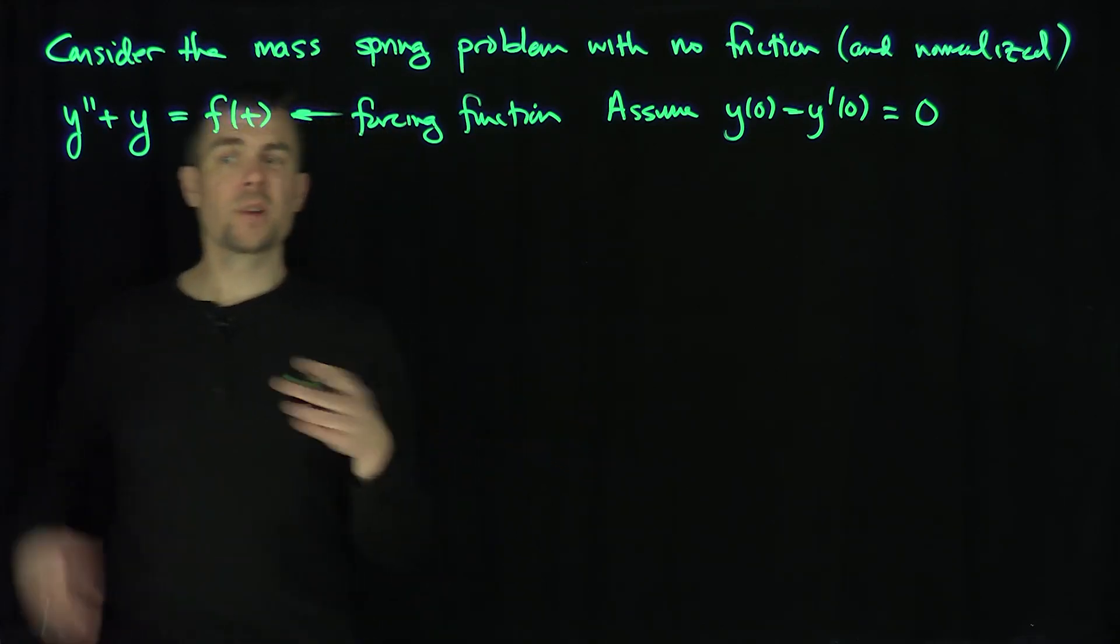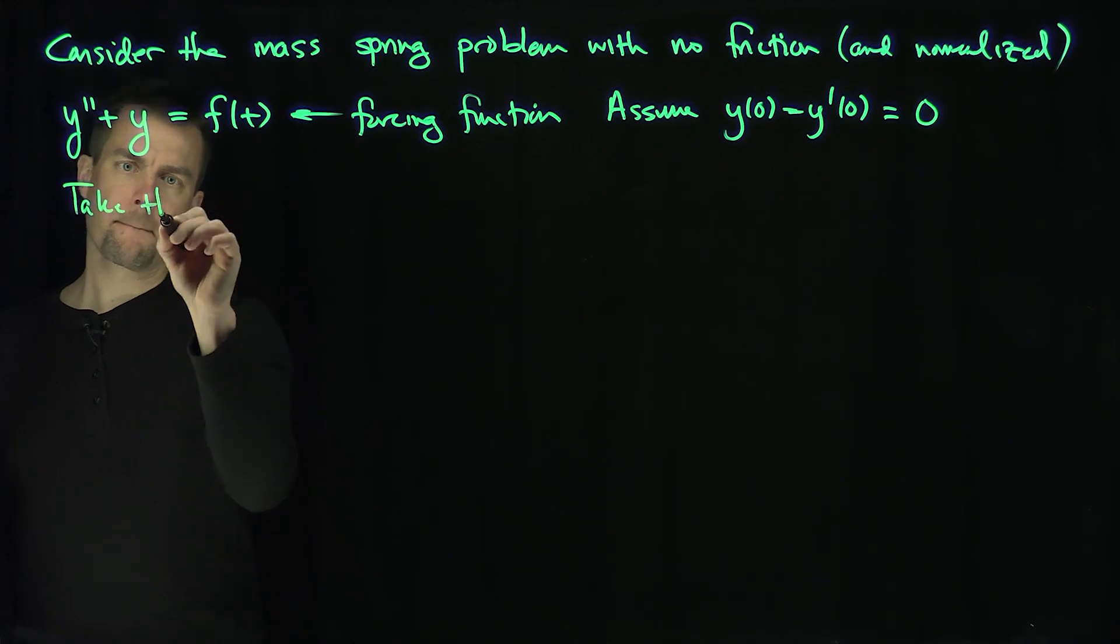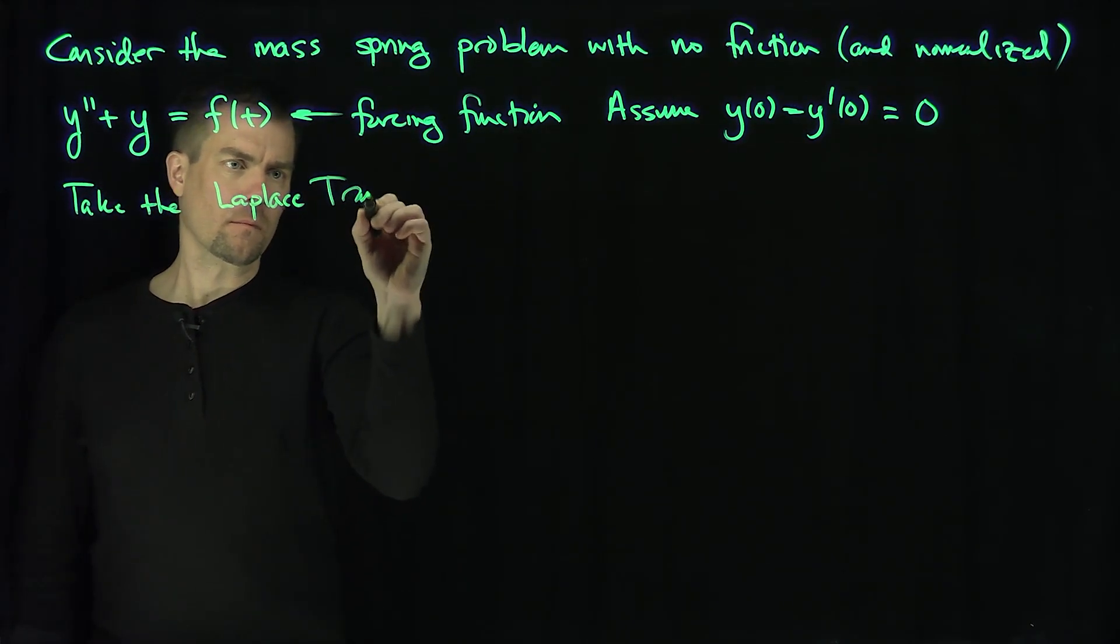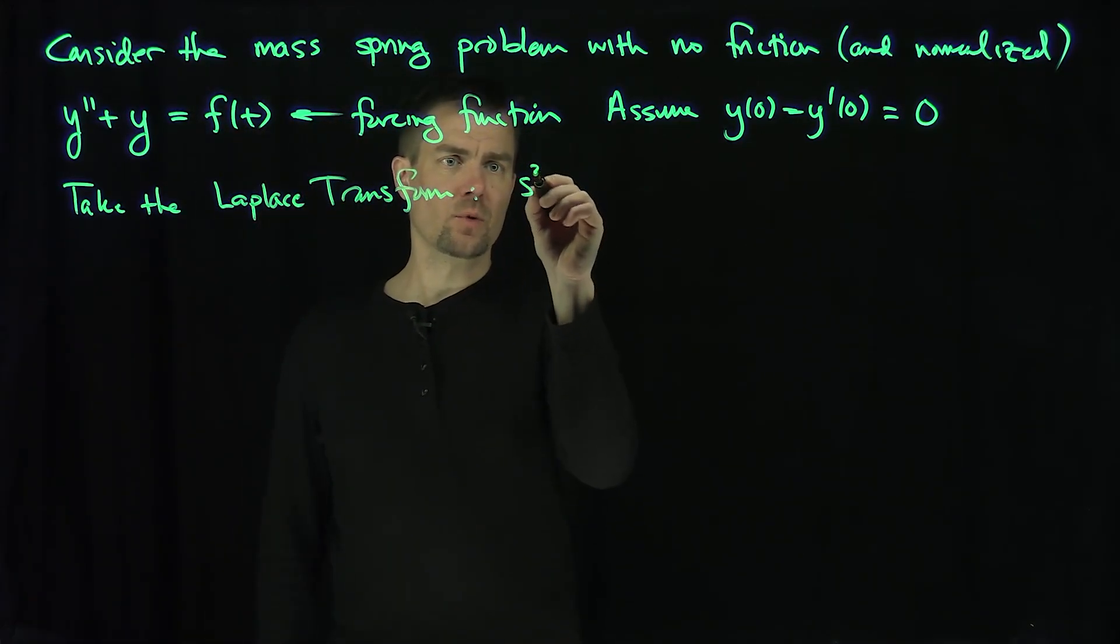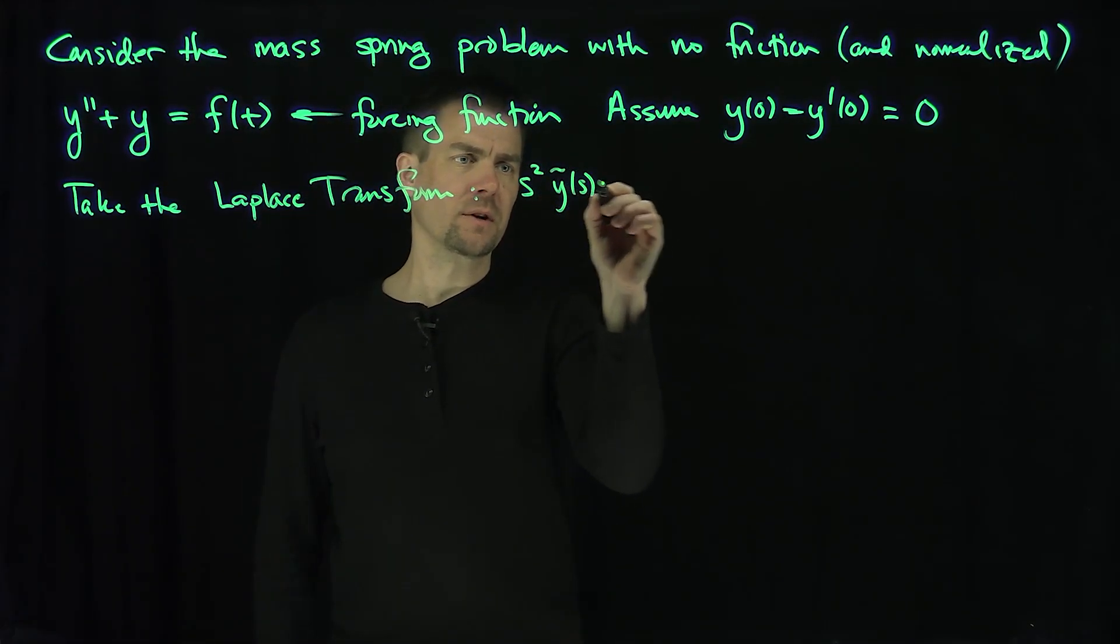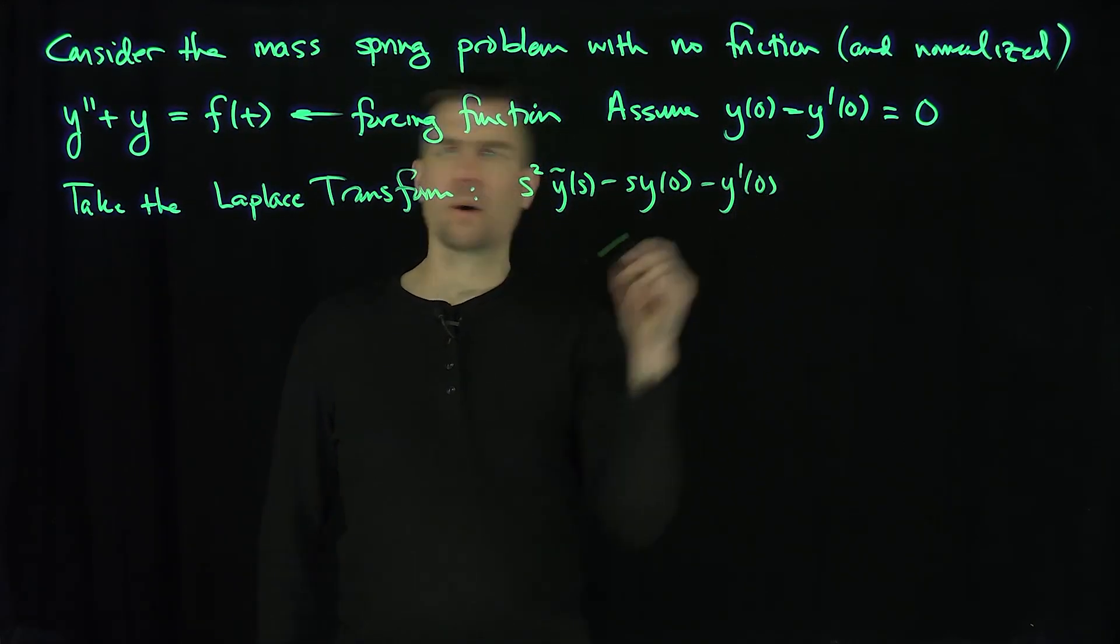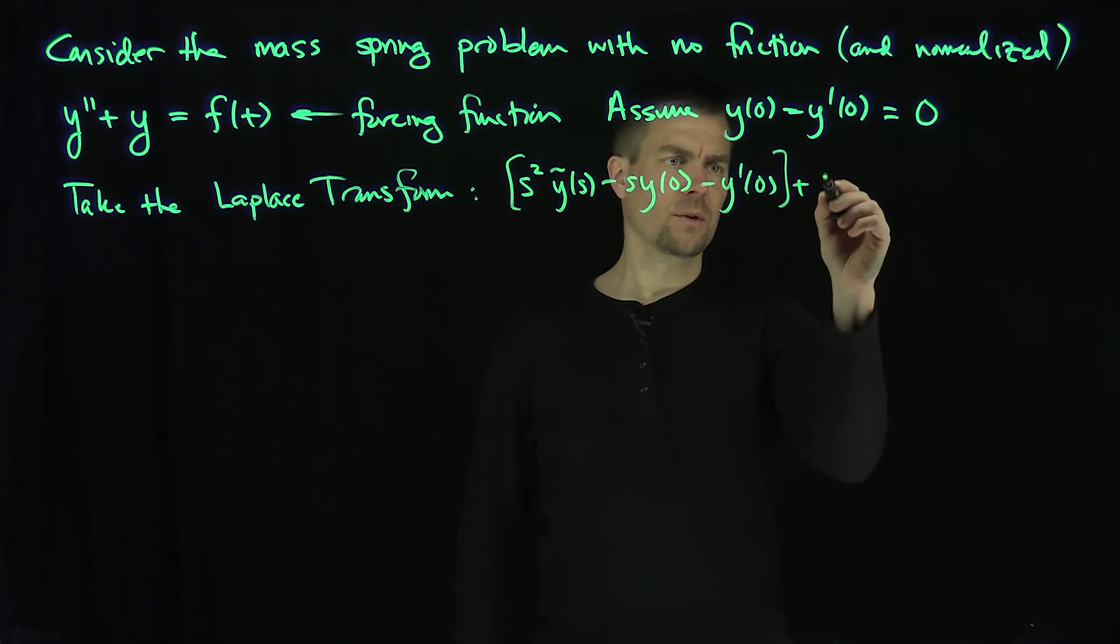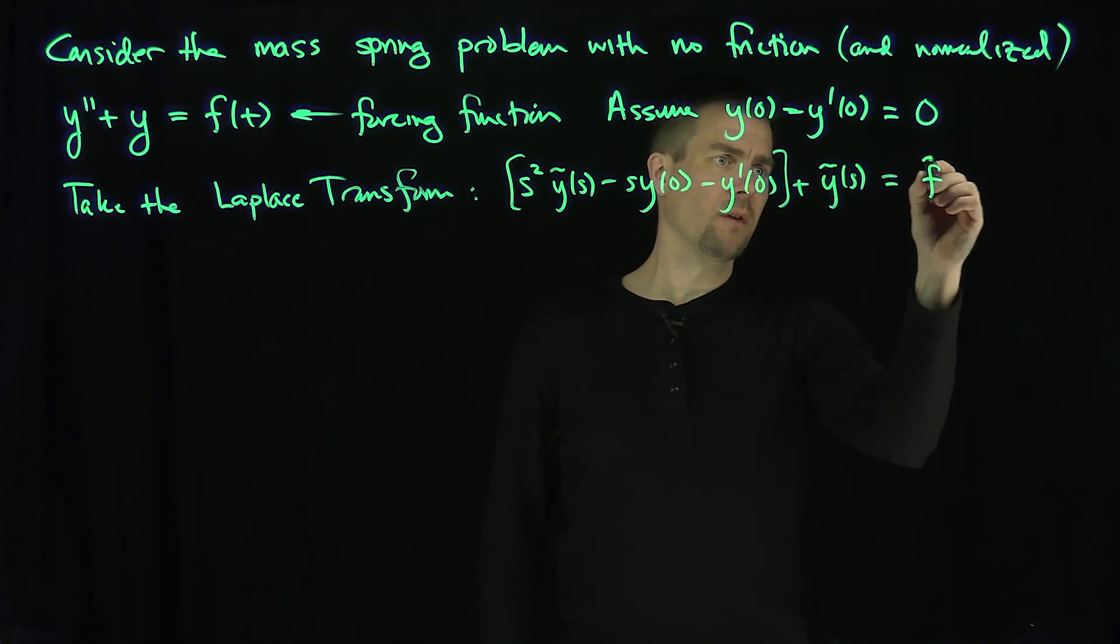So how do we construct the Green's function? I'm going to take the Laplace transform and see what the Laplace transform gives us. If I take the Laplace transform, what we get is s squared y tilde of s minus s y of 0 minus y prime of 0 plus y tilde of s is equal to the Laplace transform of f.